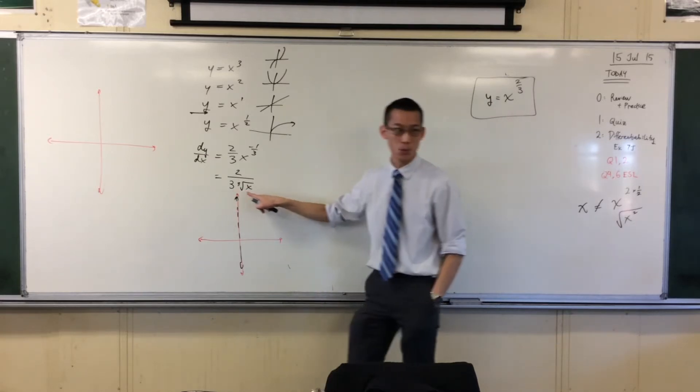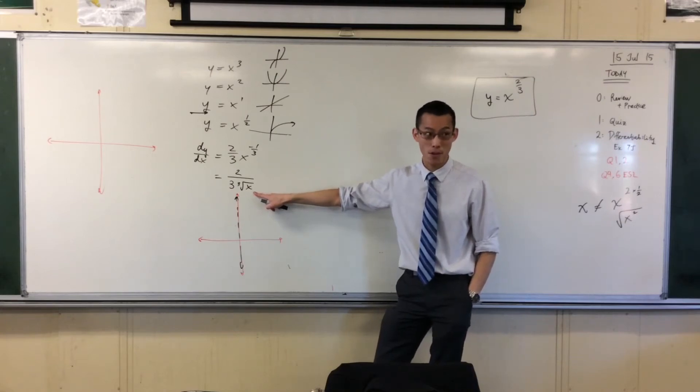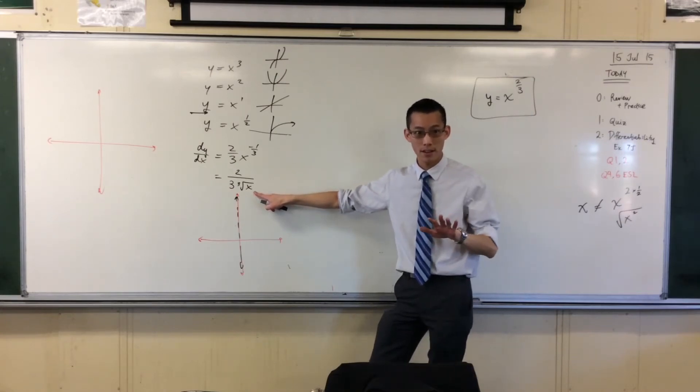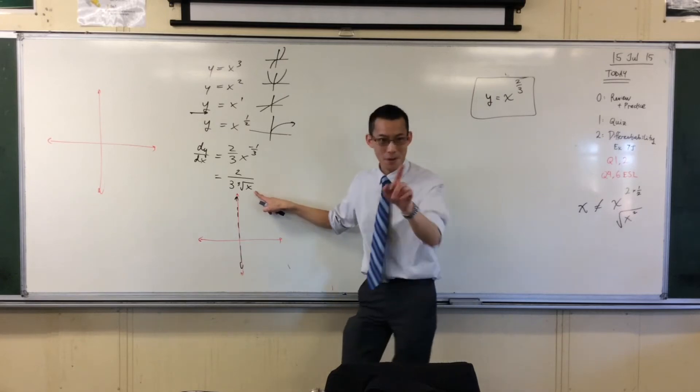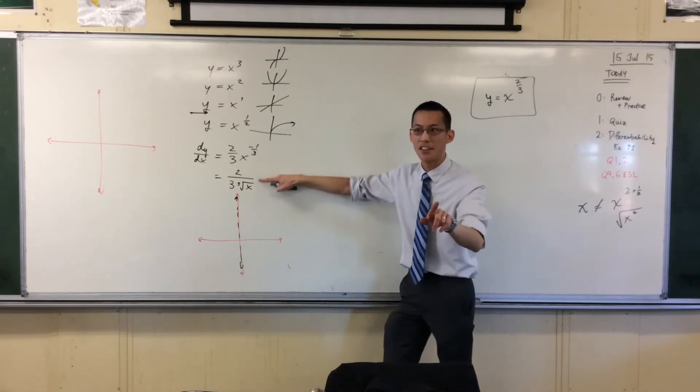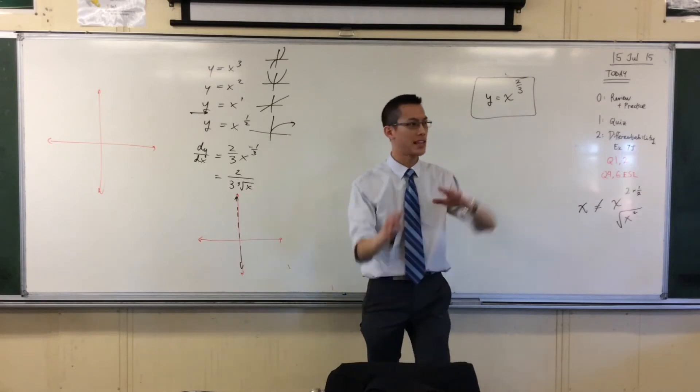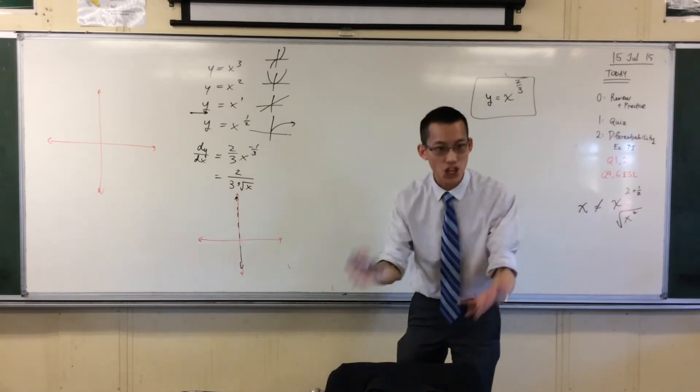And so three times a really, really small number will still be a very, very small number. You following? Yeah, so the gradient is going to increase because it's almost there. I've got a small number on the denominator. So what does that mean about the whole number? Big gradient. It's huge, right?